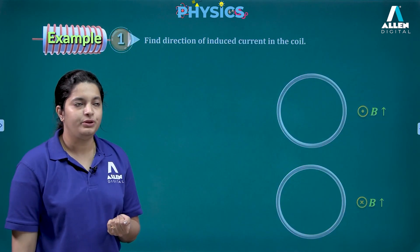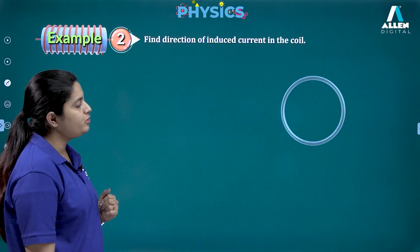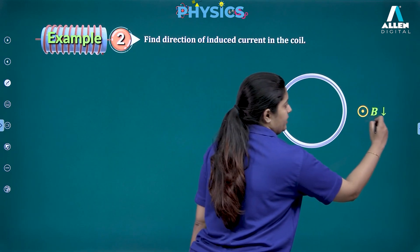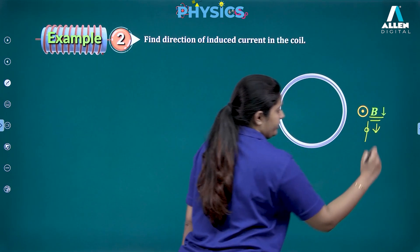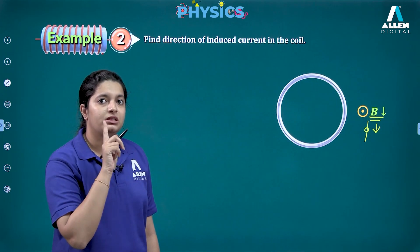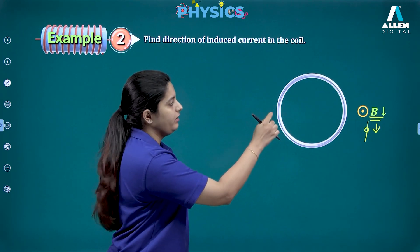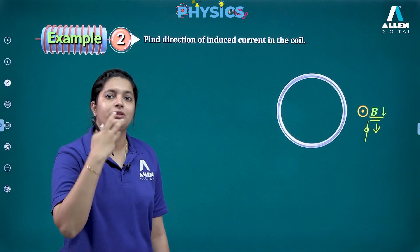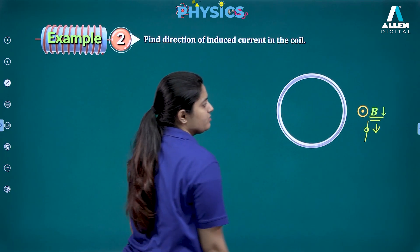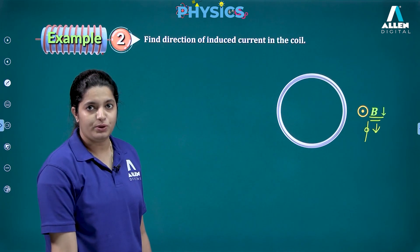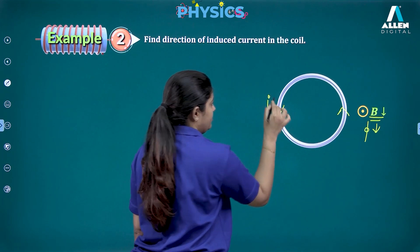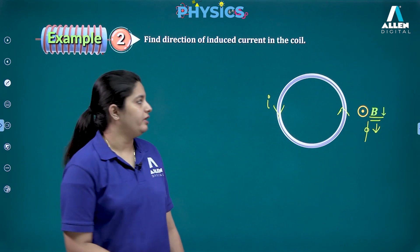In the next example with another coil: the magnetic field is outward (dots) but reducing. Since the flux is reducing, according to Lenz's law, the induced current must support it — it cannot increase it, only support it. So the induced current produces a magnetic field in the same outward direction. With thumb outward and curling fingers, the direction of induced current is anticlockwise.